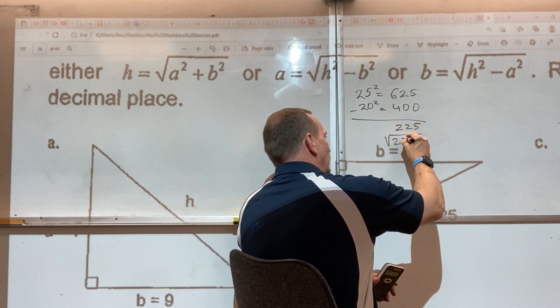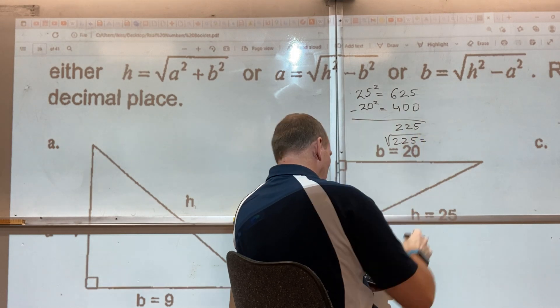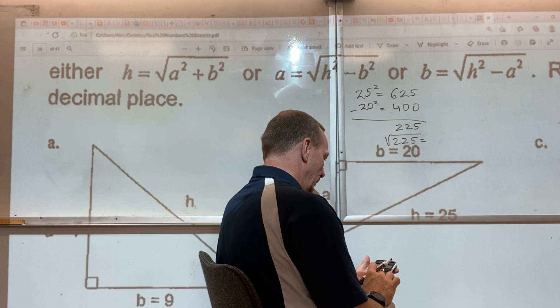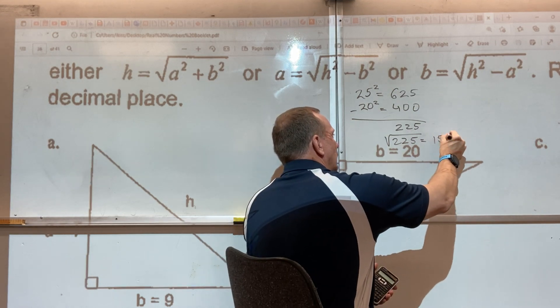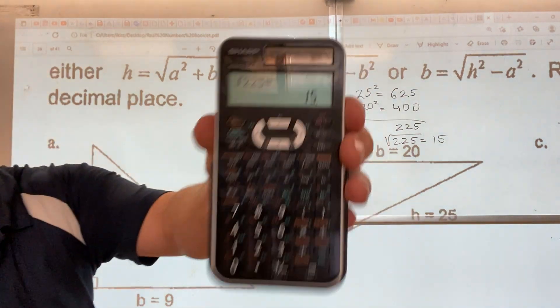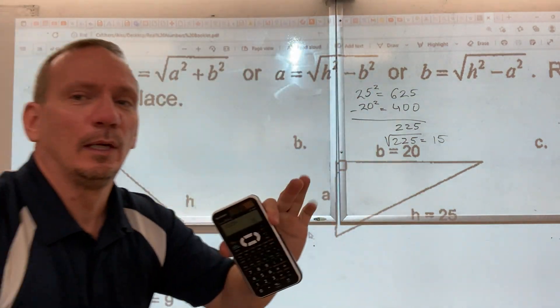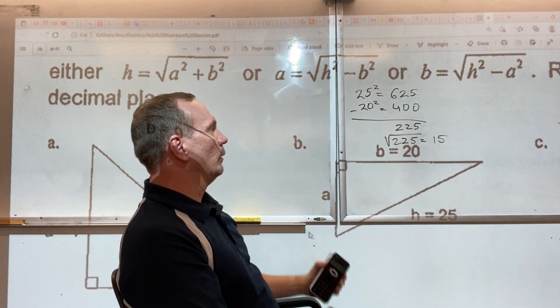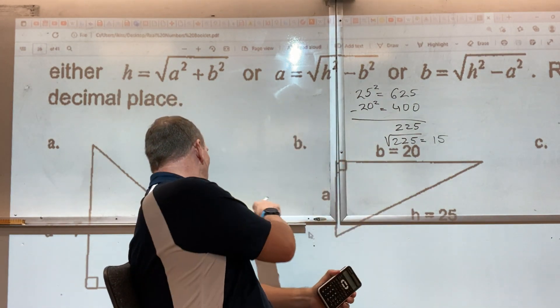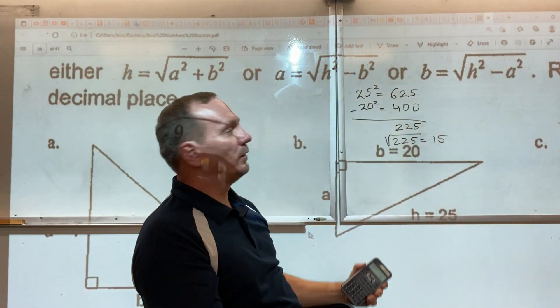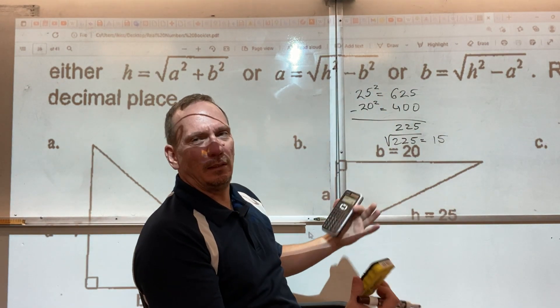Then we need to square root that number, and you divide, and it's exactly 15. That's it, it's a whole number, nice. So square root of 225. How do we enter all of this into the calculator without really noting the 625 or the 400, because we don't really need those numbers?